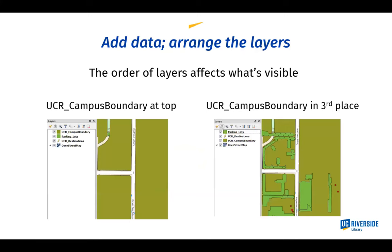When you add data, it's important to know that for most GIS, the order of layers in the layers list or table of contents affects what you can see. For example, if a UCR campus boundary layer is on top, it covers up the parking lots and destinations layers beneath it. When I move the boundary down to third place, now I can see the parking lots and destinations. This can really trip you up — if you've added a layer and can't see it, something else may be covering it up higher in the list.